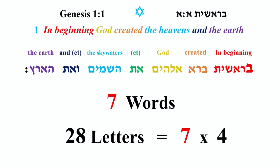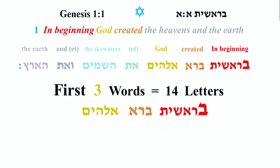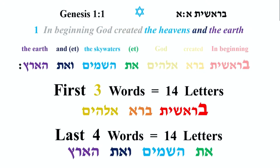You can also break down the 4 as 2 times 2 times 7 if you want. If we look at the first 3 words — Bereshit, Barah, Elohim — you have 14 letters, from the Bet to the Mem. And 14 is divisible by 7; 7 times 2 is 14. If we look at the last 4 words — Et HaShemayim v'et HaAretz — you have 14 letters as well, which again is divisible by 7 twice.